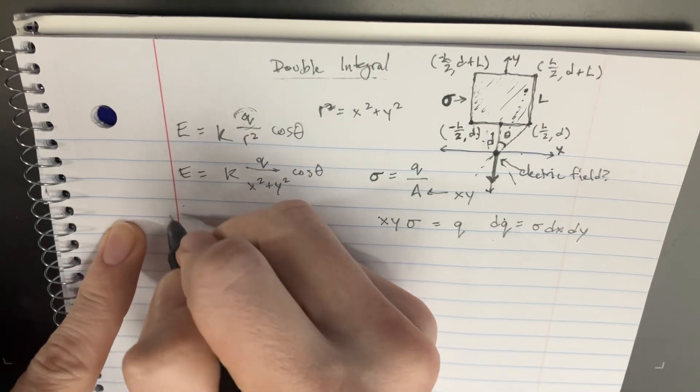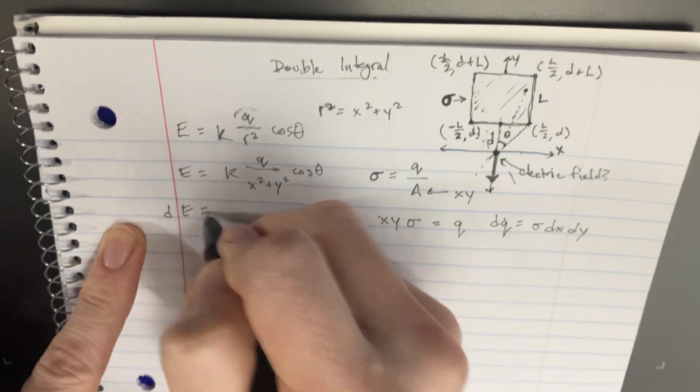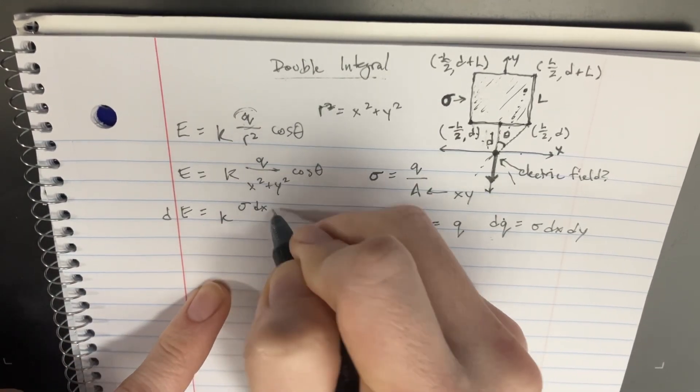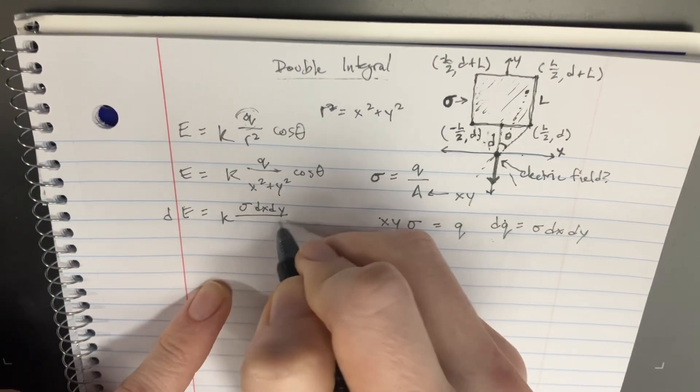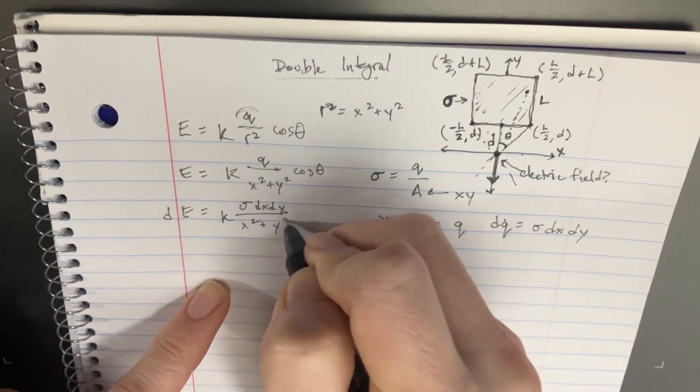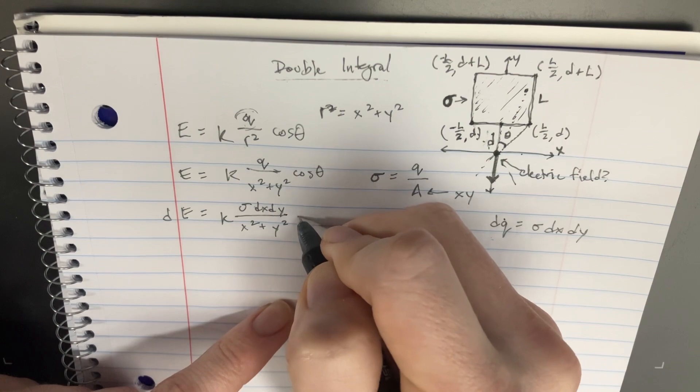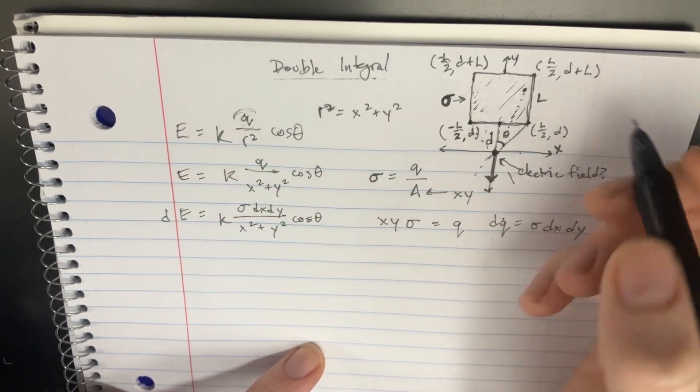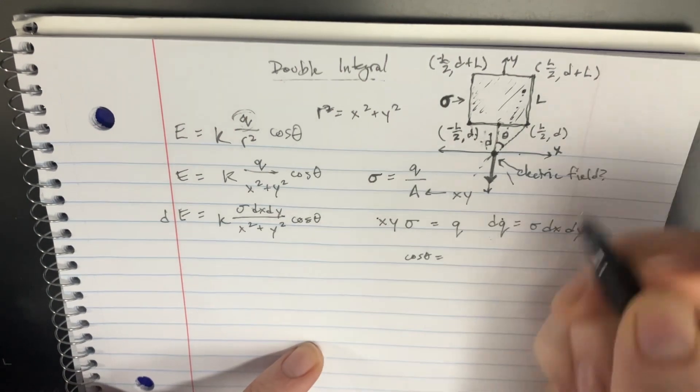And so now you can plug that into this. So let's take the d's on both sides. We get dE equals k. And then dq is just going to be density times dx dy over x squared plus y squared, and then cosine theta.